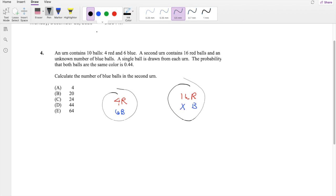Now they're saying the probability that both balls are the same color is 0.44, meaning blue from the first urn and blue from the second urn, or red, red. And now we're just looking for what is x.